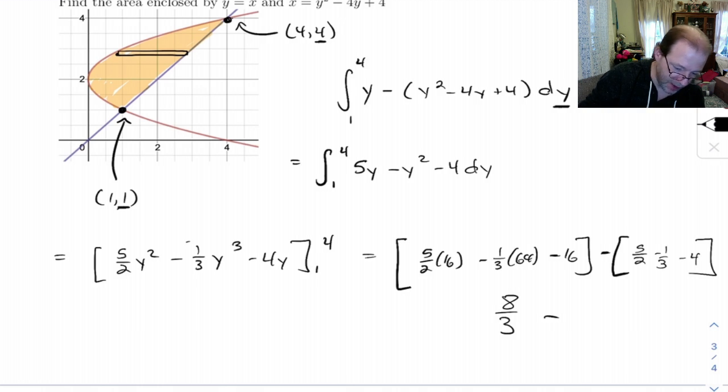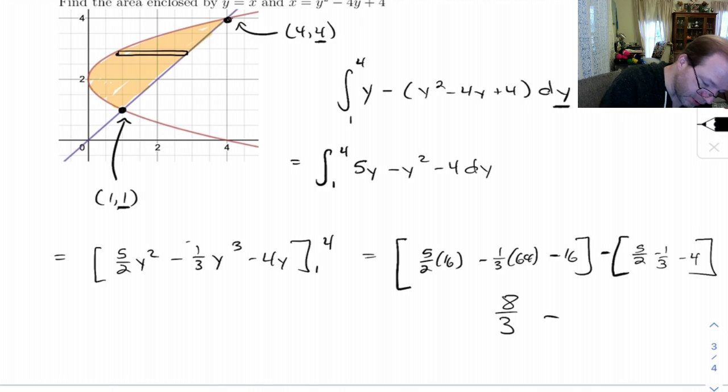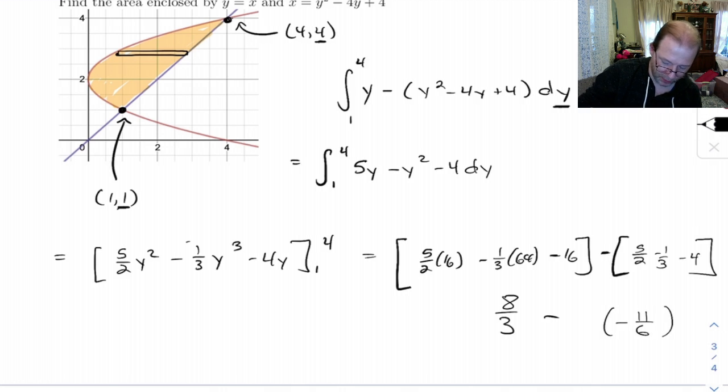And the second one, let's see, 5 halves minus 1 3rd minus 4. That's negative 11 over 6, so 8 over 3 plus 11 over 6 gives me 9 halves. So 9 halves.